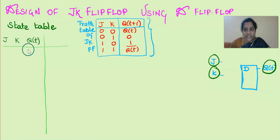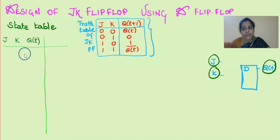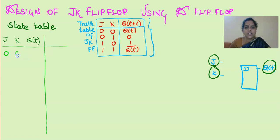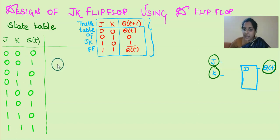As there are three input variables in this overall problem, we will be having eight different combinations starting from 0, 0, 0 to 1, 1, 1. These three values are going to determine the next state of the circuit Q(T+1).